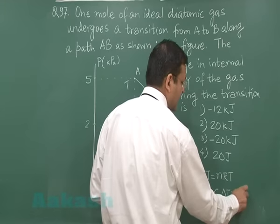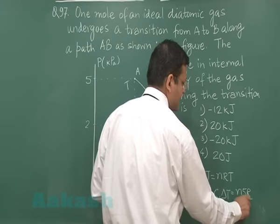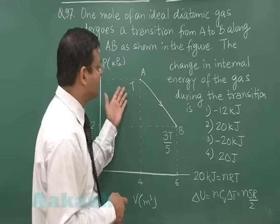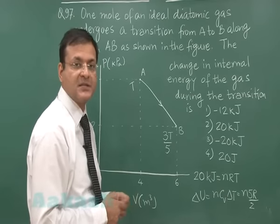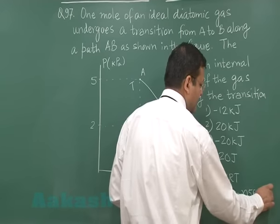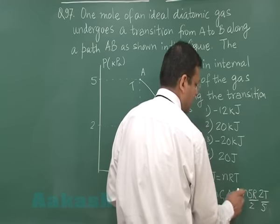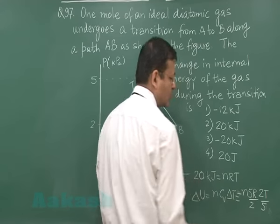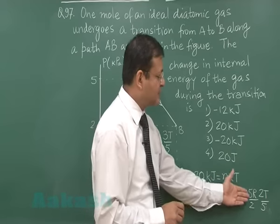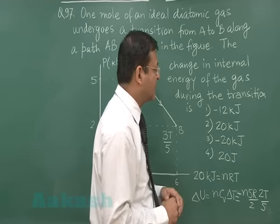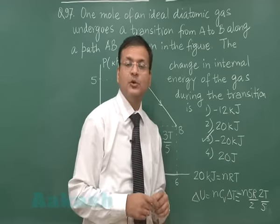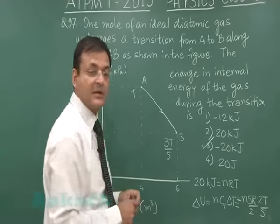And change in temperature, that means final temperature minus initial temperature, 3T by 5 minus T that is minus 2T by 5. So here you can apply 2T by 5 but with minus sign. A negative sign must be plotted here. You are supposed to calculate the value of this thing. You can clearly see this value is minus nRT. Minus nRT means minus 20 kJ and for that purpose this third option will be the most appropriate option for question number 97.